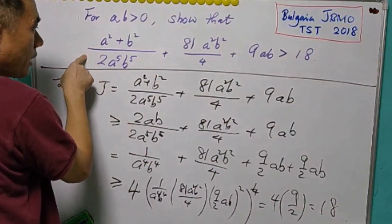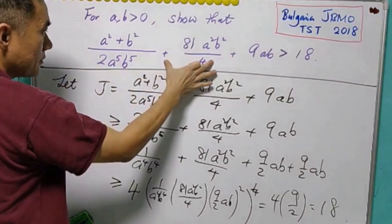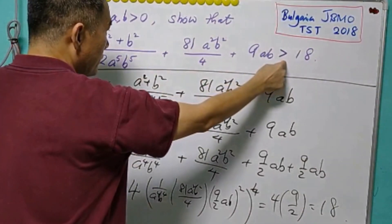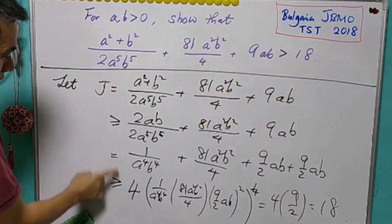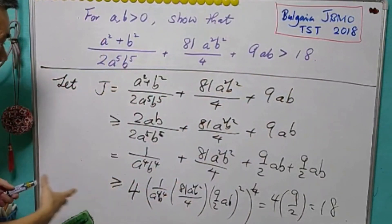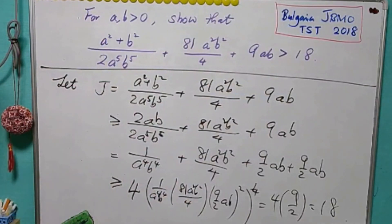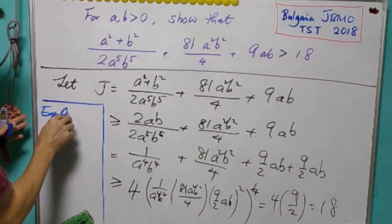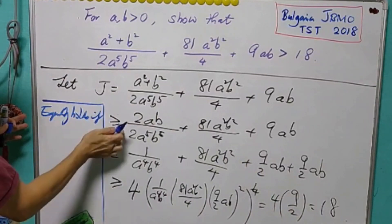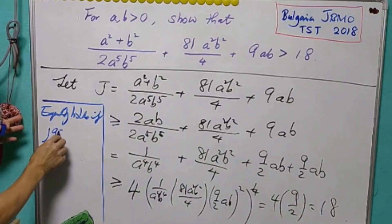Now for this question, we are asked to show this expression is strictly greater than 18. But what we have here is J is greater than or equal to 18. So we need to show that the equality never holds. So let me continue here. The equality holds generally if, from here,